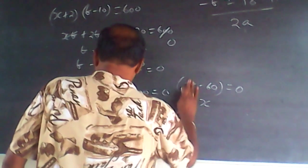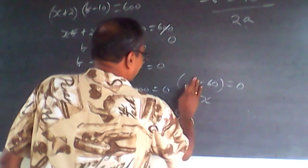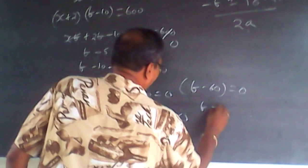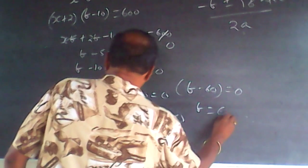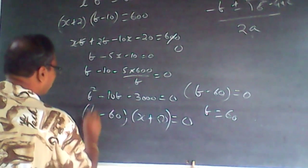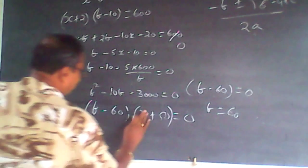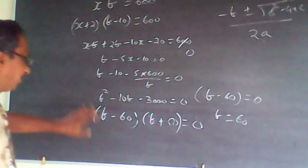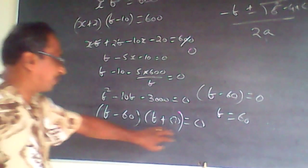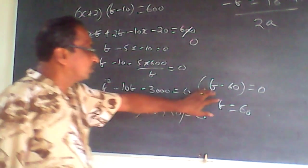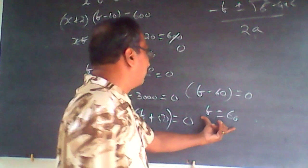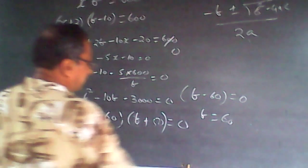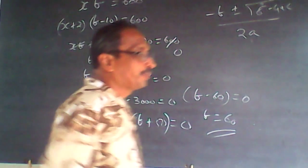Therefore b minus 60 equals 0, giving b equals 60. The number of benches that should have been there is 60. The answer is 60.